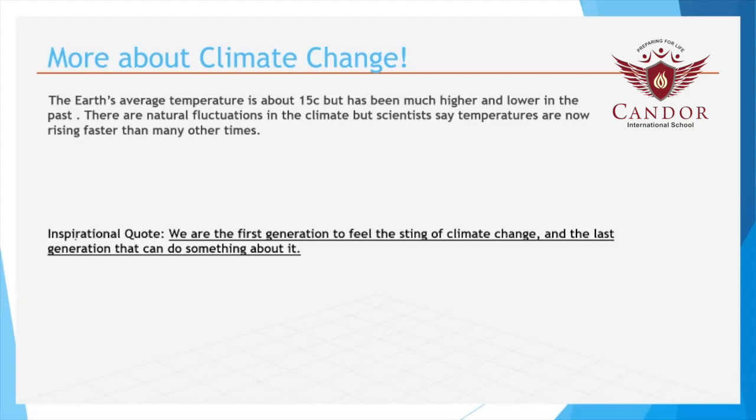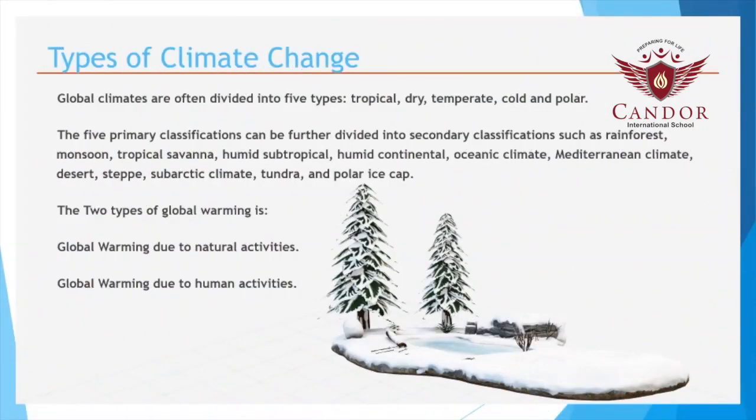Barack Obama said, "We are the first generation to feel the sting of climate change and the last generation that can do something about it." There are many types of climate change but there are five main types: tropical, dry, temperate, continental and polar.